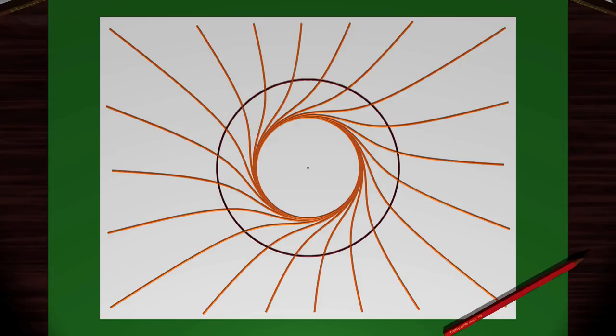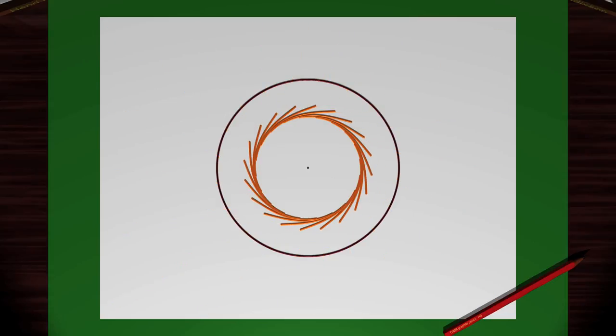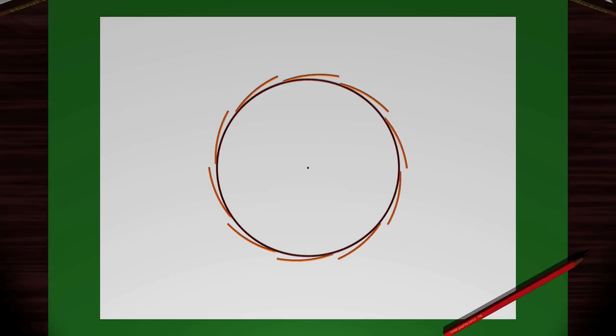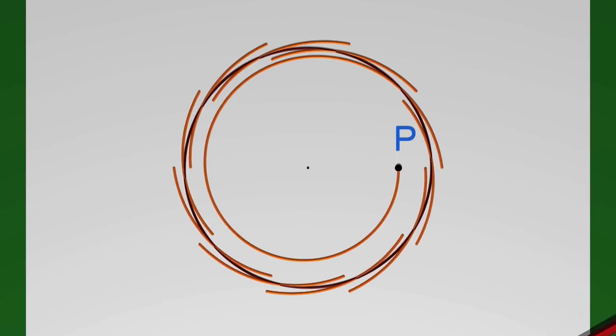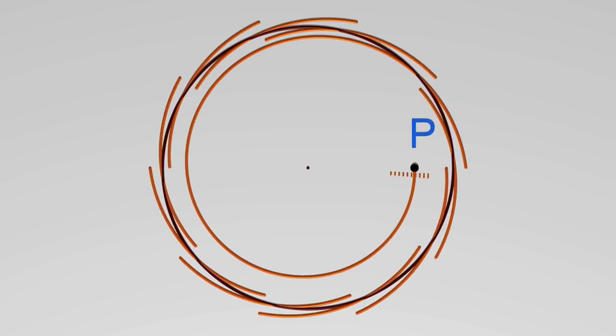How do we prove such a theorem? Here is the main idea. Take a point on the circle and observe the trajectory through the point entering the circle. Stop. Let's stop at a point P.